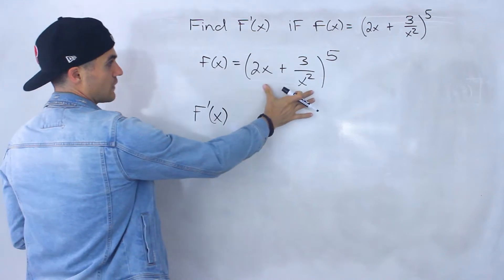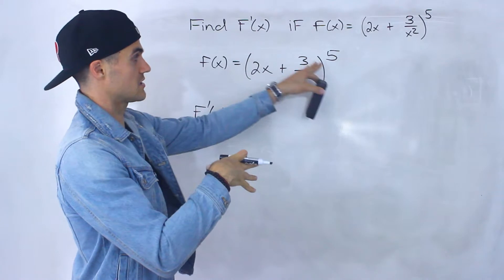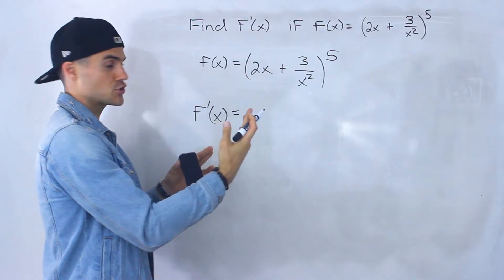Notice that there's a function, 2x plus 3 over x squared within another function, right, to the power of 5. So what we got to do is we got to take the derivative of the outside function first.